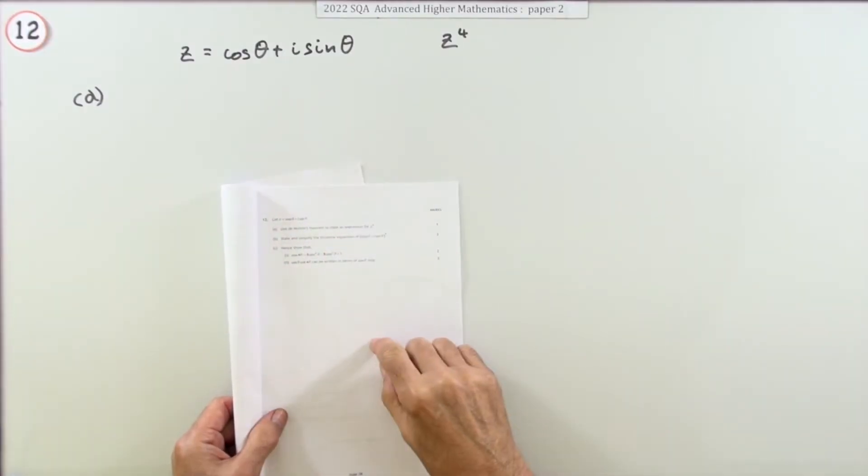Question 12 then from the 2022 Advanced Higher Paper 2. We've got complex numbers and a trig identity. It's a sort of standard question for 1, 3, 3, for eight marks.